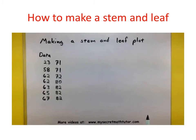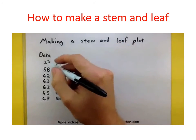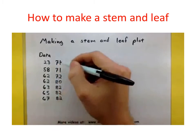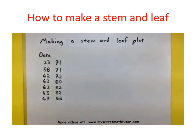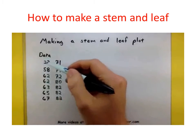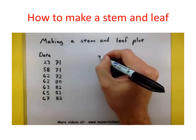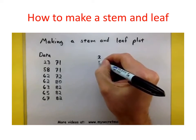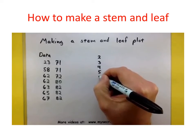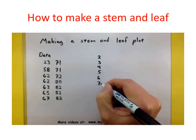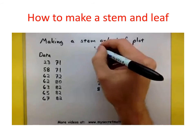Let's see how this works out by first creating the stems. I look at all the numbers and their leading values, and it looks like I have a 2, a 5, some 6s, 7s, and 8s. So my data goes from the 20s all the way up to the 80s. I'm going to use 2, 3, 4, 5, 6, 7, 8 — and these are my stems.